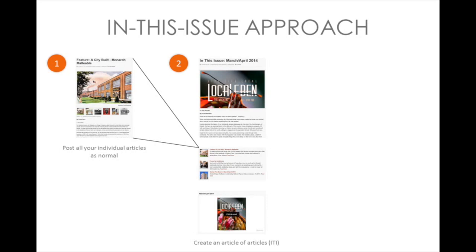If you are using a digital edition and it is on your homepage in a readable format, or it links out to a third party like Issuu, you're doing it wrong. Embed it in this article. When you want to promote your digital edition, you share this article — they can read it on this page with Issuu and many other providers. This will single-handedly drive page views. When people want to share your digital edition, they'll share this page. Whether they come from a share or from print, they might come to read the digital edition but then click a link to see more pictures, enter a contest, or watch a video, and now they're discovering other content.